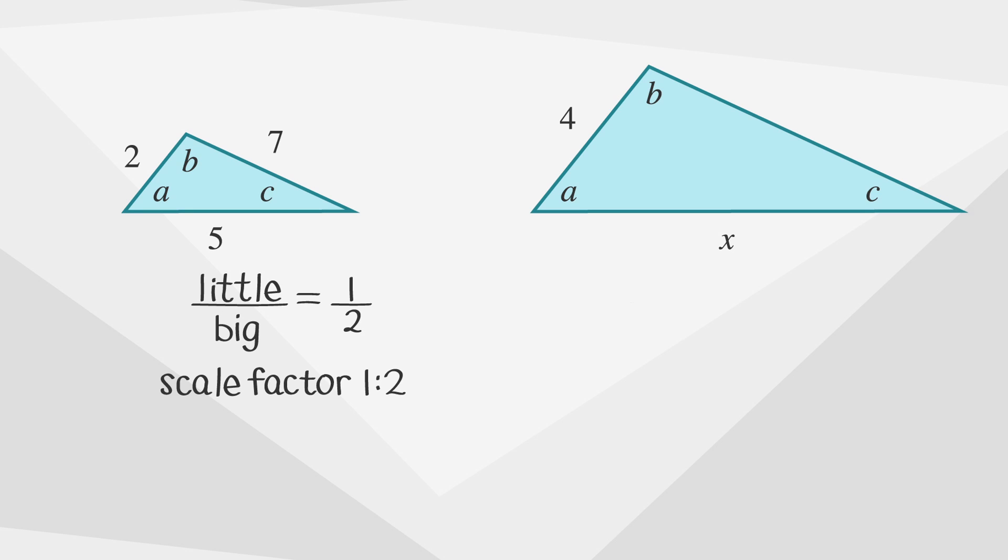Using this ratio we can now solve for X on the side of the big triangle that corresponds to the side measuring five on the small triangle. Using the formula little over big equals little over big we get two over four equals five over X. If we cross multiply four times five and two times X we get two X equals twenty. Dividing each side by two we get X equals ten.